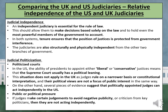Next, we look at the relative independence of both courts, covering judicial independence and judicial politicisation. An independent judiciary is essential for the rule of law. Both US and UK systems encourage judicial independence, meaning judges are free from external pressure, improper influence, or interference. This allows them to make decisions based solely on the law and to hold even the most powerful members of government to account. In both systems, tenure ensures that the position of justices is protected from government interference, and the judiciaries are structurally and physically independent from the other two branches of government.